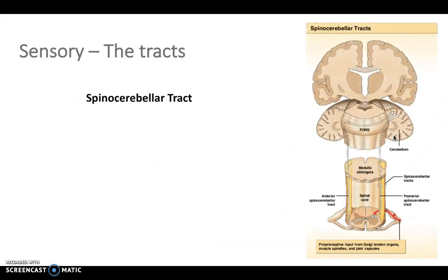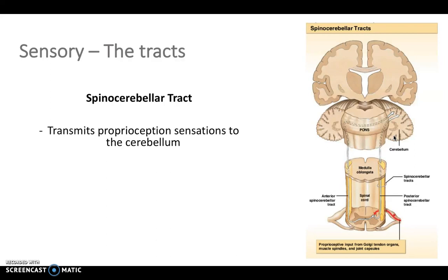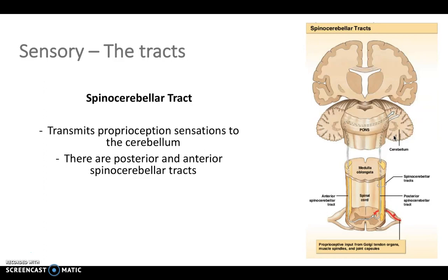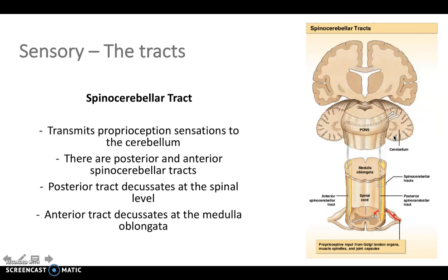The spinocerebellar tract simply transmits proprioception sensations to the cerebellum. This makes sense because the cerebellum is all about fine movement and correcting movements, so we want to know about our body's position so the cerebellum can coordinate a response to any incorrect movements. There's a posterior and an anterior tract — the posterior decussates at the spinal level and ascends to the cerebellum, while the anterior tract decussates at the medulla oblongata.